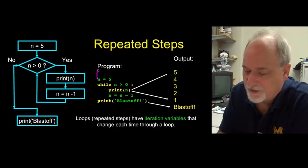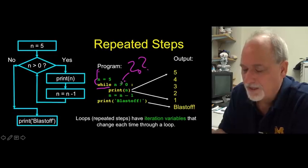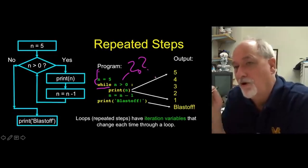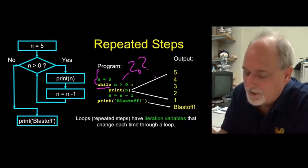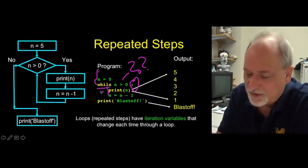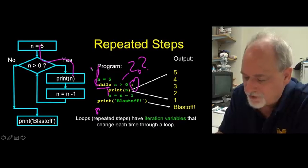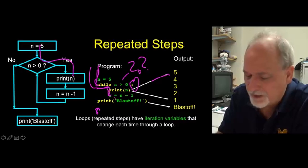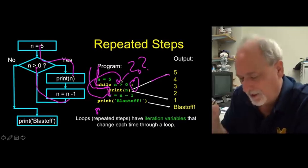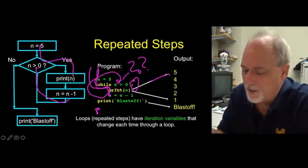So how do we encode this notion that we want to do something for not forever but for a while? We have our statement, sequentially go to this while. While is a keyword and it's asking another question, is n greater than zero? I read this as, as long as n remains greater than zero, keep doing this indented block. You have a colon at the end and then you have two lines of code that's indented. So it comes in, and if this is true, it runs these two lines. Prints out n, n is five, and then it says n equals n minus one, which makes n be four.